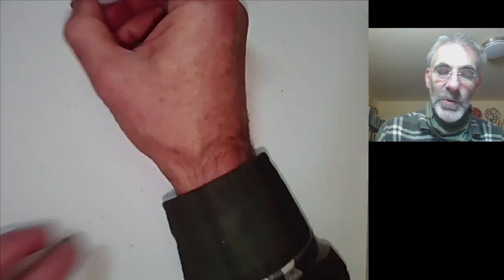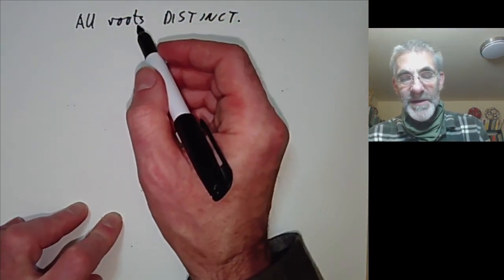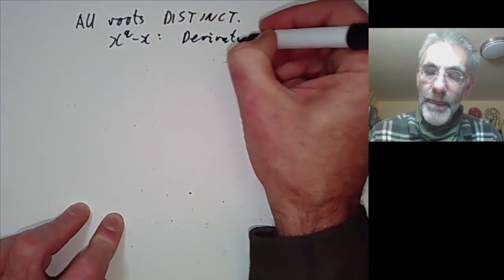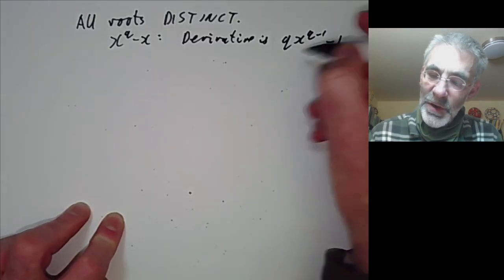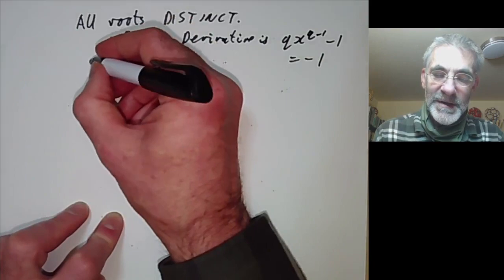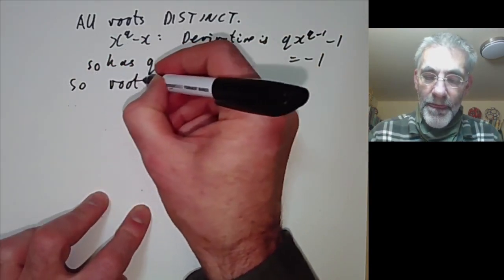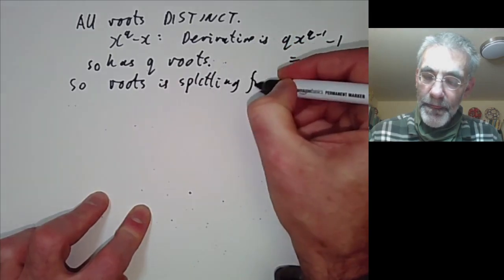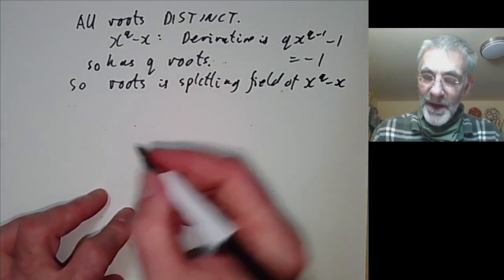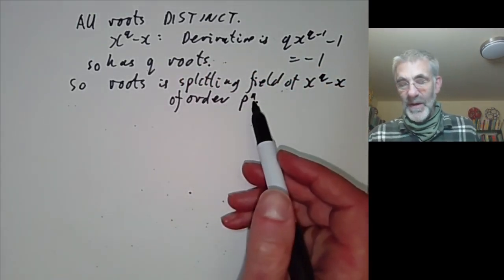We can also check that all roots are distinct. A polynomial has distinct roots if it is coprime to its derivative. The derivative of x^q − x is q·x^(q−1) − 1, which equals −1 because q = 0 over the finite field. So it's certainly coprime to its derivative and has q distinct roots. Therefore the set of roots is the splitting field of x^q − x, it is a field, and it has order p to the n. We've found a field of order p to the n.